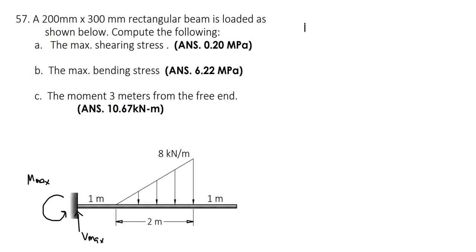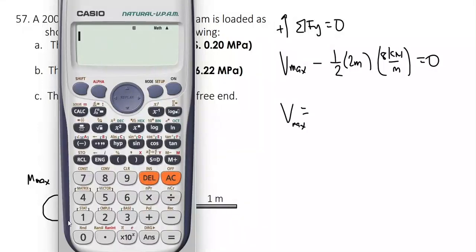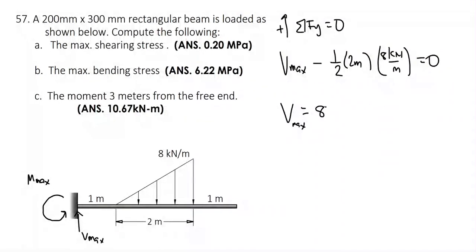To solve for the shear, we take summation of forces vertical equal to 0, considering upward forces to be positive. We have Vmax minus the triangular load. To get the resultant, we get the area — the area of the triangle is one-half times the base of 2 meters times the height of 8 kN per meter, all equal to 0. So we get Vmax equal to one-half times 2 times 8, which is equal to 8 kN.